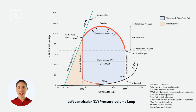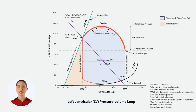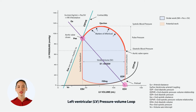Now, let's draw the line of the arterial elastance, which goes from the end systolic pressure point to the end diastolic volume at zero pressure. Of course, this is because elastance is pressure divided by volume.